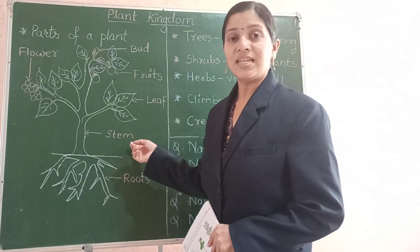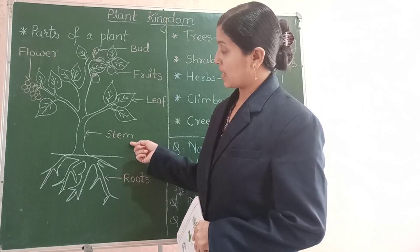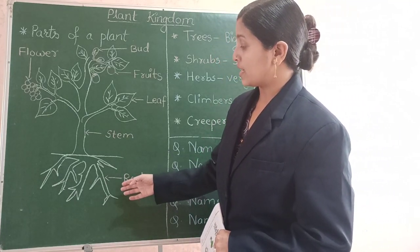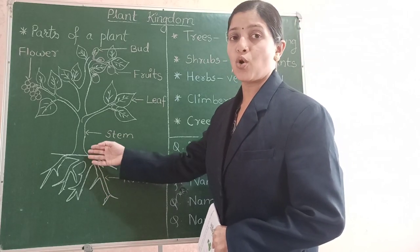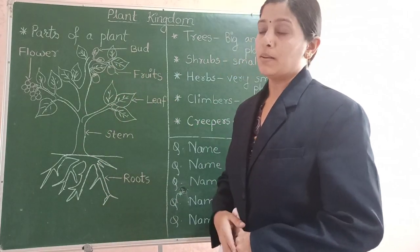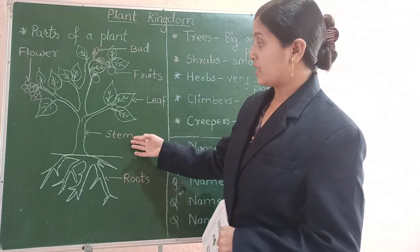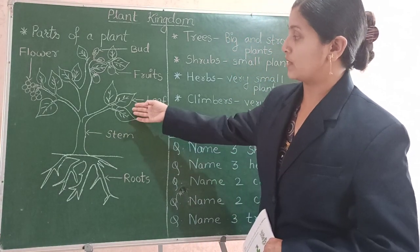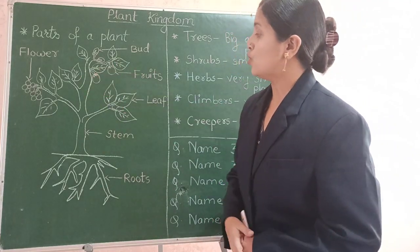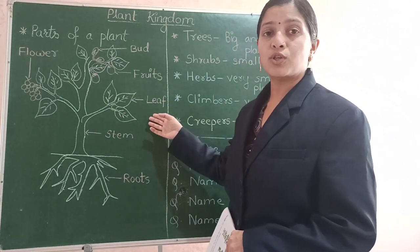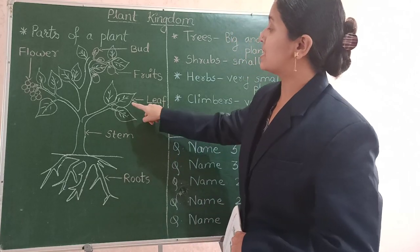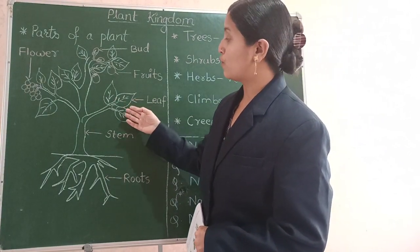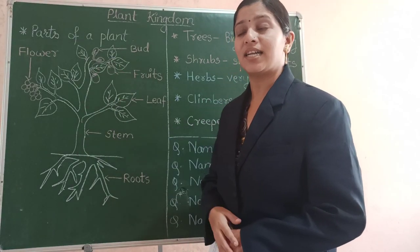The next part is the stem. The stem provides the water that is absorbed by the roots to all other parts of the plant. It provides water to the leaves. It is in these leaves that the preparation of food for the entire plant takes place.